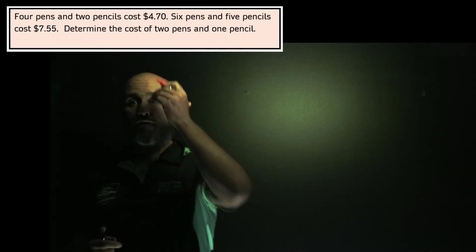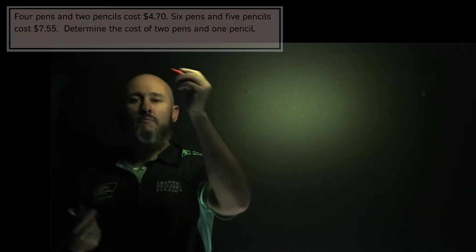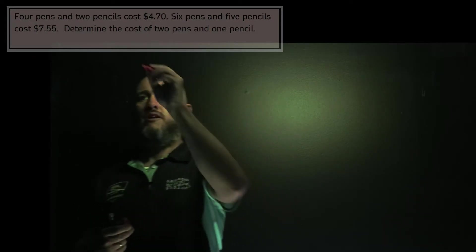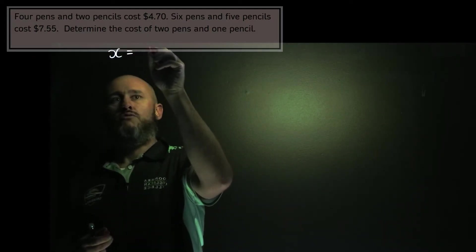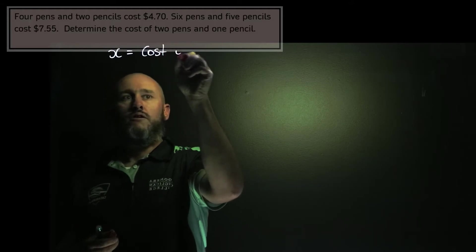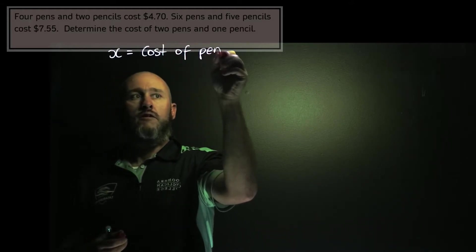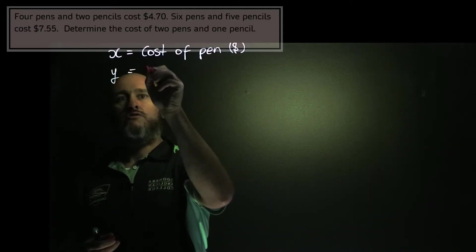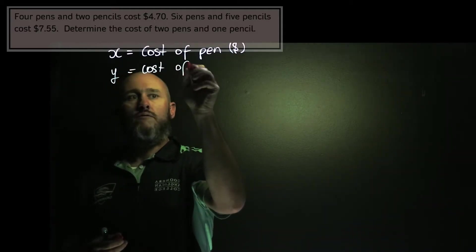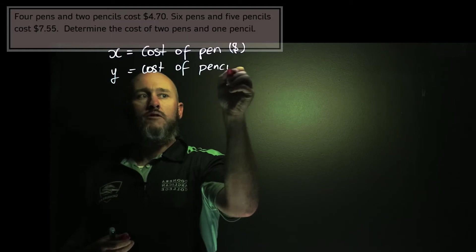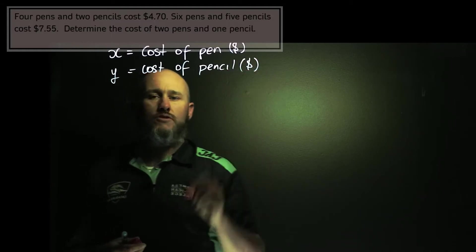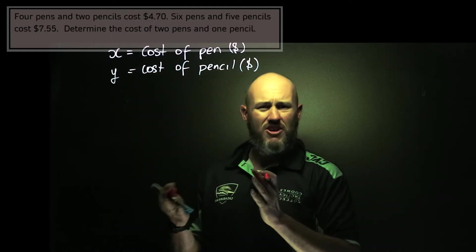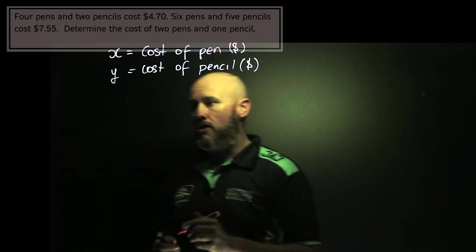So let's set this up. Firstly, let's define our variables. Pens and pencils start with the same letter, so I'm going to go back to the good old X and Y. X equals the cost of a pen, and of course I'm going to measure that in dollars. And Y is equal to the cost of a pencil, and I'm going to measure that in dollars too. So I have to be really careful that my variables are all measured in the same units.